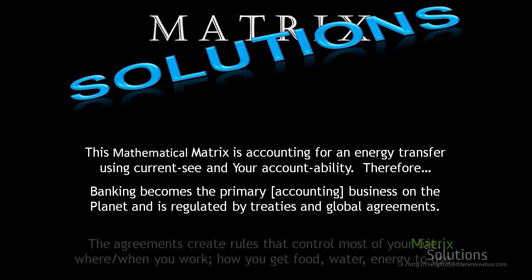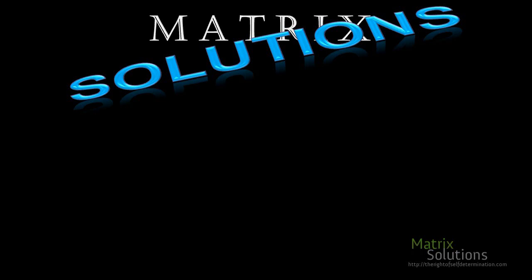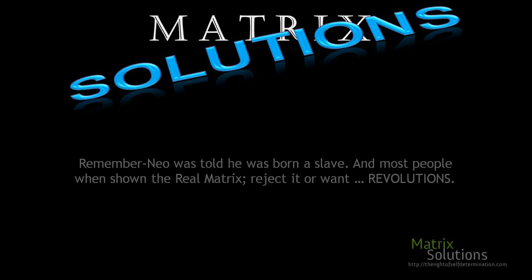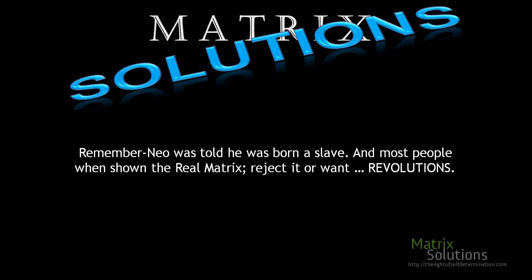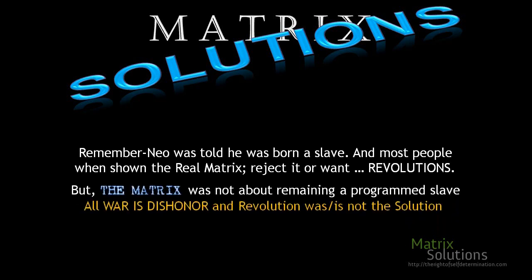This system is regulated by treaties and global agreements. Those agreements create rules that control most of your life — where and when you work, how you get food, water, and energy. Remember, Neo was told that he was born a slave.